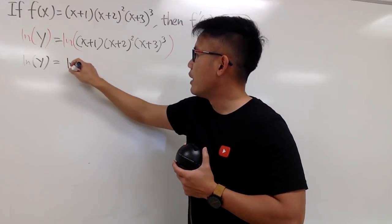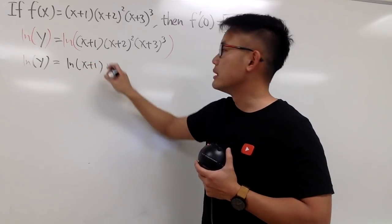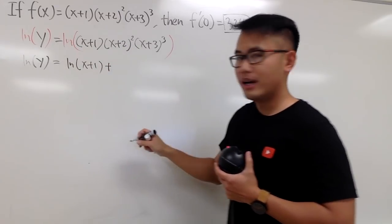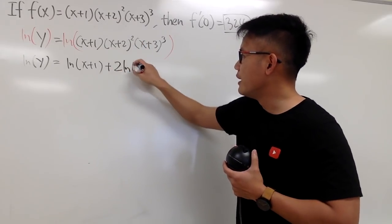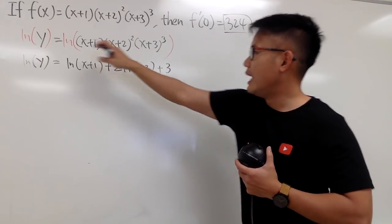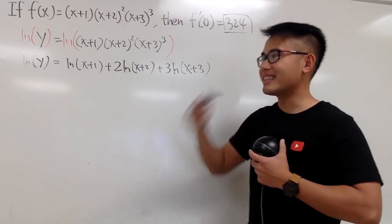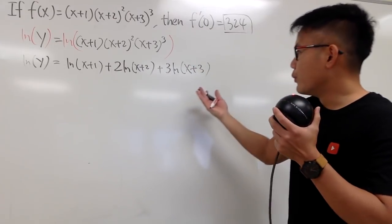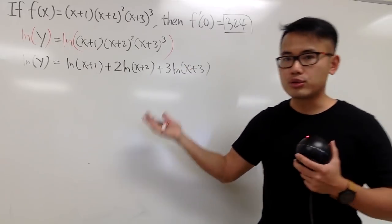This is going to first give us ln(x+1), and then this is going to give us plus another ln and the 2 is the coefficient, so it's 2 ln(x+2). And then, we add it with 3 ln of this, x+3, like that. So, we are doing the algebra first. This right here is just all about the natural log property.